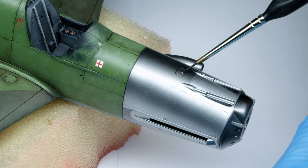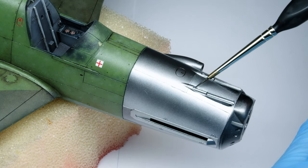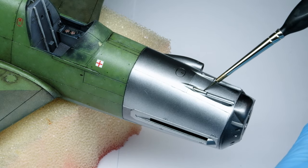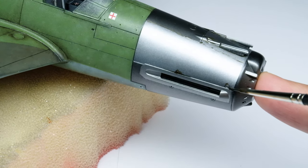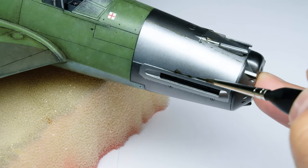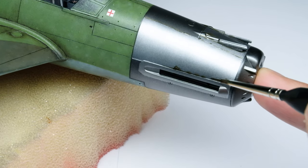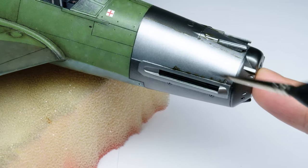With the AK panel liner wash, I accentuated the panel lines on the bare metal finish. After letting it several minutes to dry, you can easily wipe it off of the glossy surface. Then I painted the gun barrels in dark grey.